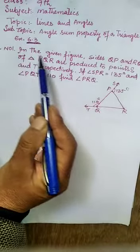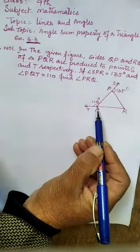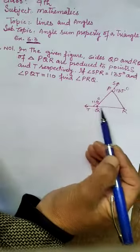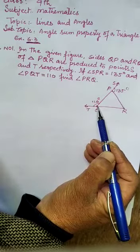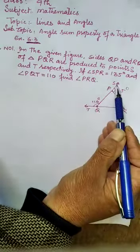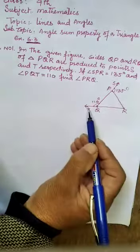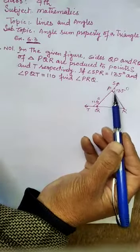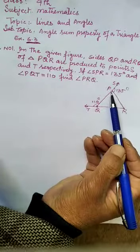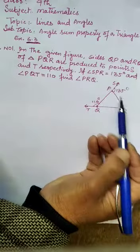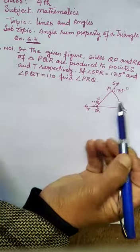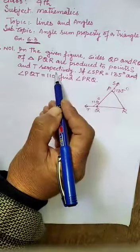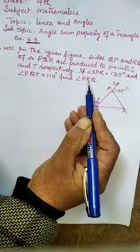Question number 1. In the given figure, this is the figure. The side is QP and R. QP is a side, you can extend or produce this side. The other point is T, so we will extend this side to create an exterior angle. The exterior of the triangle is SPR. The angle SPR is 135 degrees, the angle PQT is 110 degrees, and we need to find angle PRQ.